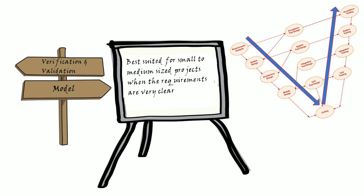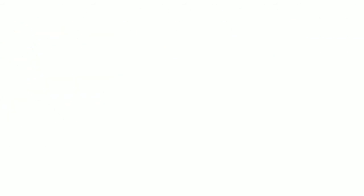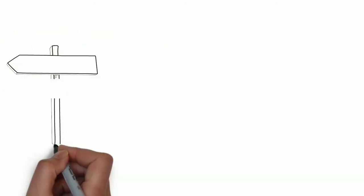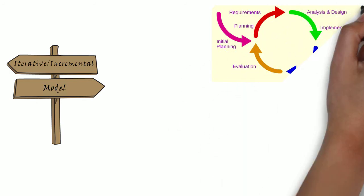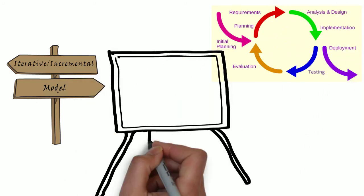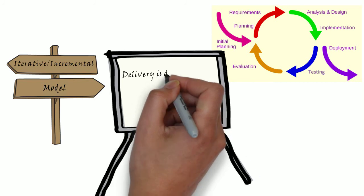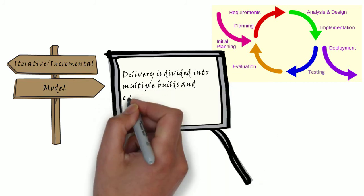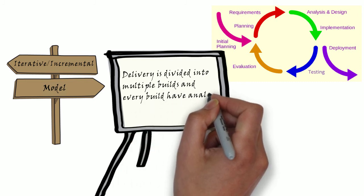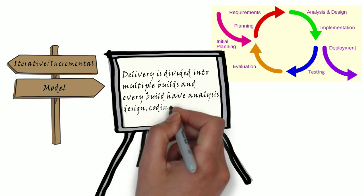We have seen two models - waterfall model and V model. Now let's get into the next model, iterative or incremental model. Here delivery is divided to multiple releases and each release has design, coding, implementation, testing. Rapid application development and agile comes under this model. Scrum is a process in agile.